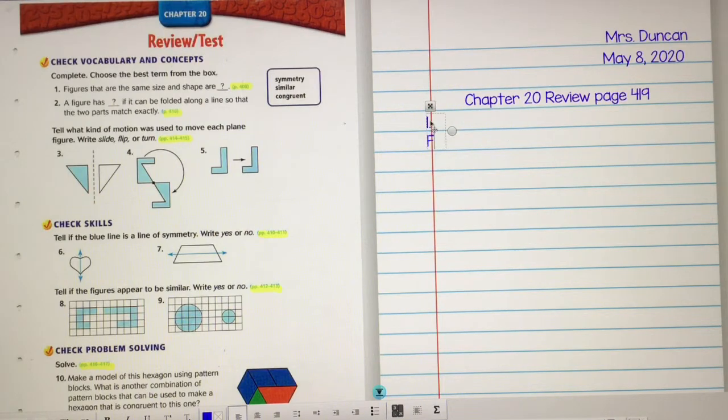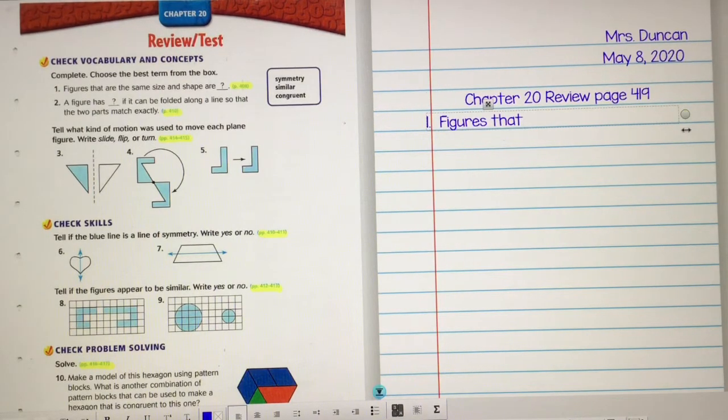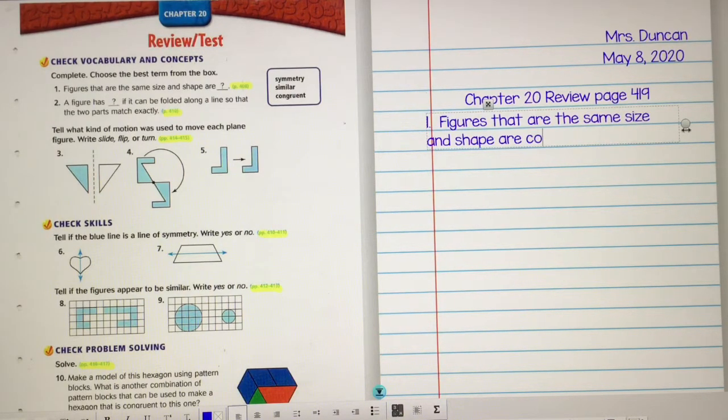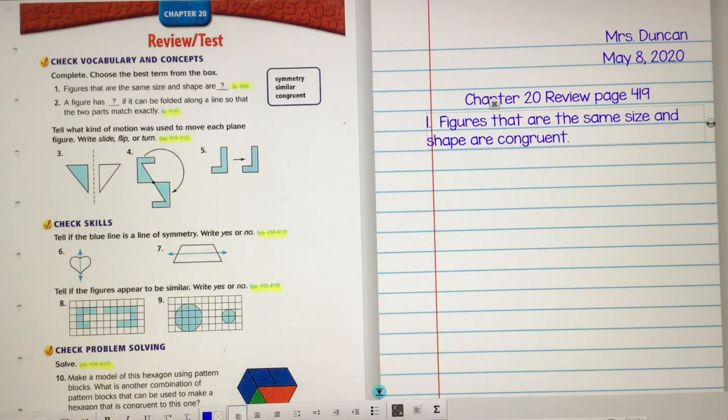I'm going to write figures that are the same size and shape are congruent. I want to make sure we have all that. Figures that are the same size and shape are congruent.